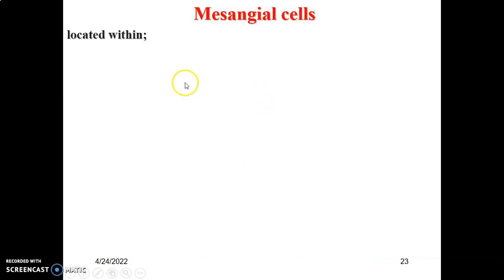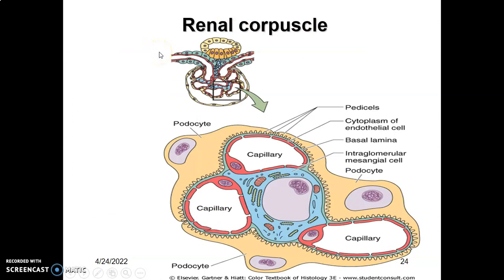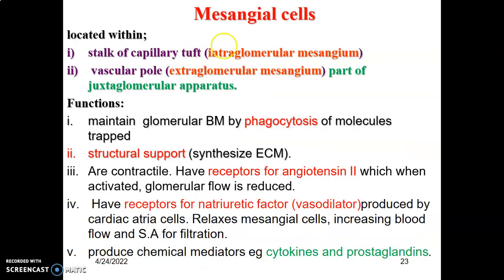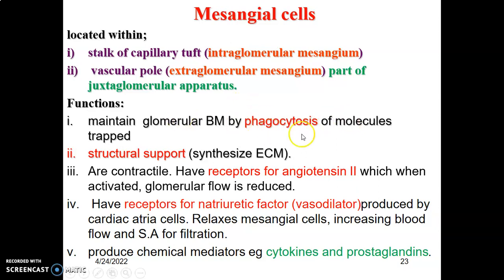We have what we call mesangial cells. Where are they located? They are usually within the glomerulus, but we also find others outside the glomerulus. We can find them within the capillary tufts of the glomerulus; we call them intraglomerular mesangial cells. At the vascular pole, they form part of the juxtaglomerular apparatus and are called extraglomerular mesangial cells. One function is to maintain the glomerular basement membrane by phagocytosis of molecules that are trapped; they are phagocytosed by the intraglomerular mesangial cells.